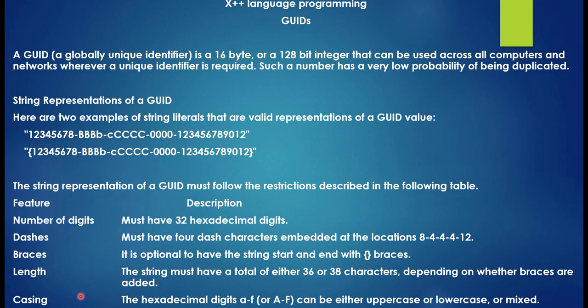Another rule is casing: the hexadecimal digits A to F can be either uppercase or lowercase, or mixed. So whenever we create a GUID through a string literal, we need to follow these rules. These are the basic rules to create a GUID from a string representation. On the next lesson, we'll go and see in a practical way how to generate GUIDs in this programming language.